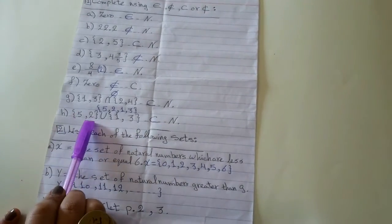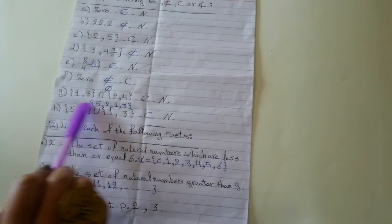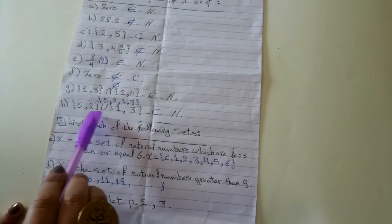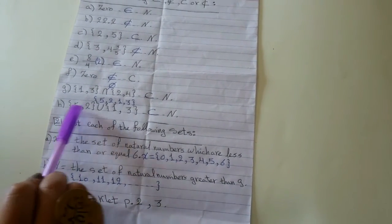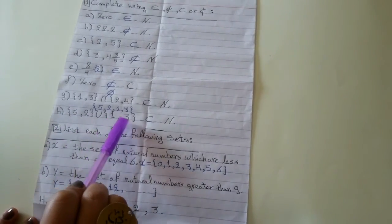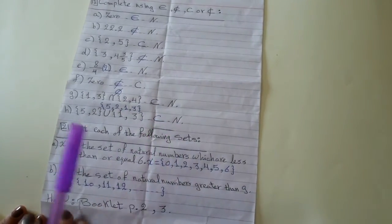5 and 2, union 1 and 3. Union means I will collect all the elements inside one set without repetition. So, the new set have 5, 2, 1 and 3. And all of these elements, element to N.